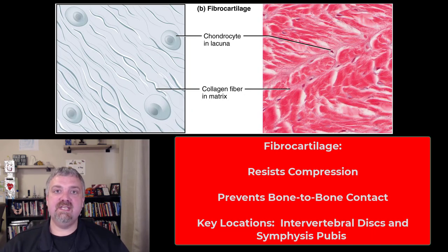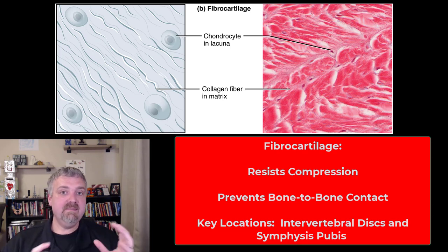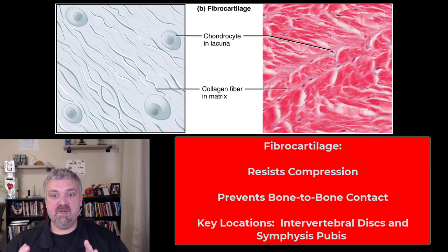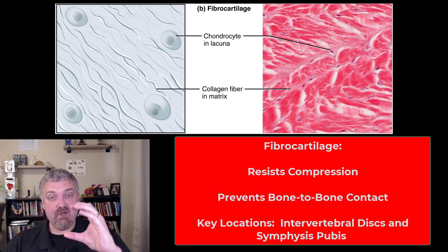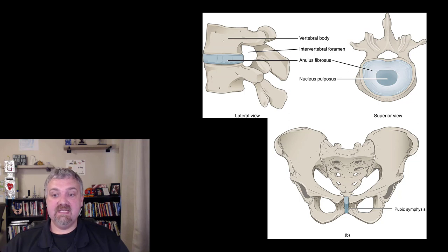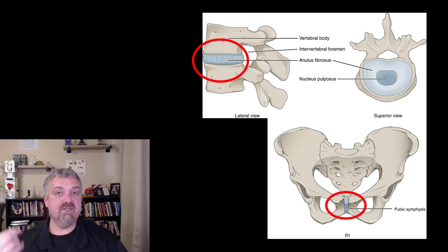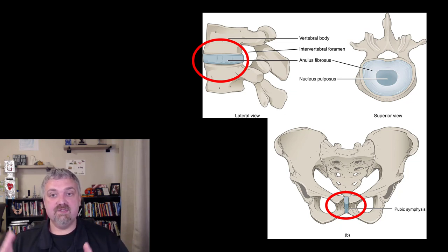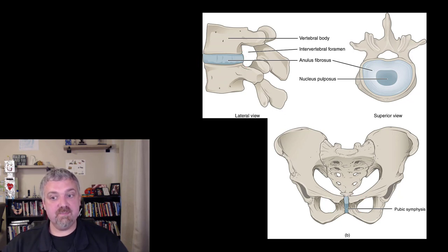Next we have fibrocartilage. The key concept here is that fibrocartilage resists compression. It limits movement more than hyaline cartilage, but it prevents bone-to-bone contact from compression. The key examples are the intervertebral discs — the shock absorbers between all of your spinal bones, your vertebrae. Here we see an intervertebral disc, and also the pubic symphysis. That fibrocartilage pad keeps your two pubic bones from crashing together. Those are the key examples of fibrocartilage.